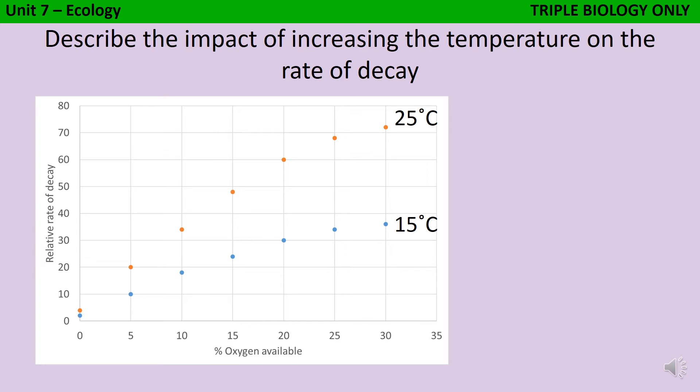The first thing we need to say in this question is that as the temperature increases, the rate of decay increases. The second thing I would want to do is to support this using some data. So, for instance, I could pick an oxygen availability like 5% and then say that at 15 degrees, the relative rate of decay is 10 times, but at 25 degrees, it's 20 times.